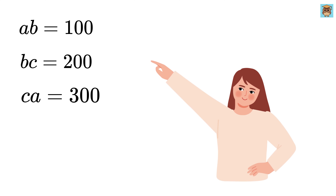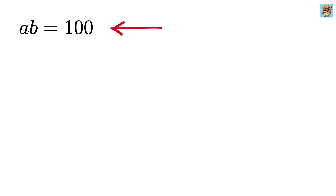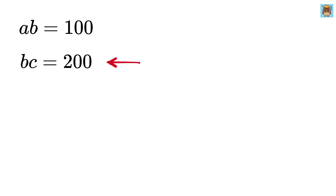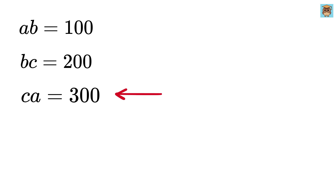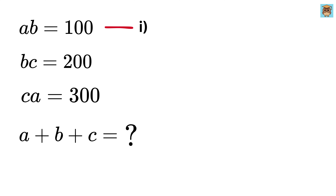Today we will be solving this nice olympiad question. We have ab equals 100, bc equals 200, and ca equals 300. Our job is to find out the value of a plus b plus c. Let us call this equation one, this equation two, and this equation three.